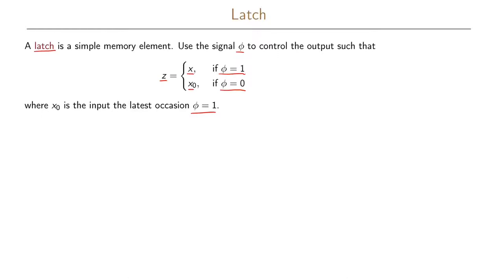Our latch has two input signals: the control signal phi and the data input signal x, and then the output signal z. In order to realize this latch we need to make a state transition graph, because we need to remember whether we're going to output a zero or a one when the latch is in the locked state, that is when phi equals zero.